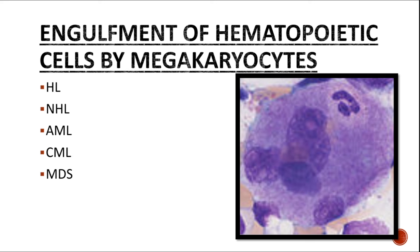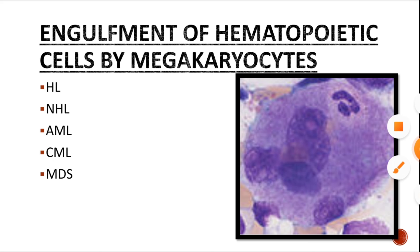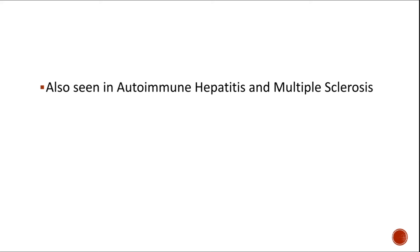In the second classification, you can have engulfment of hematopoietic cells by megakaryocytes. We saw earlier that the megakaryocyte engulfed a neutrophil, and this image also shows a large megakaryocyte that has engulfed a neutrophil. Engulfment of hematopoietic cells by megakaryocytes is seen in Hodgkin and non-Hodgkin lymphomas, myeloproliferative neoplasms such as acute myeloid leukemia, chronic myeloid leukemia, and myelodysplastic syndrome.